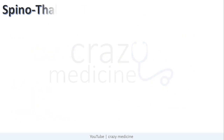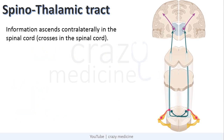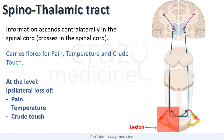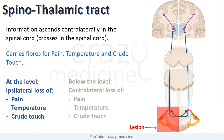Next is the spinothalamic tract. Information ascends contralateral in the spinal cord, i.e. it crosses in the spinal cord itself. It carries fibres for pain, temperature, and crude touch. So its lesion will cause ipsilateral loss of these sensations at the level of lesion because fibres are not yet crossed at that level. And below the level of lesion there will be contralateral loss of these sensations because there is involvement of already crossed fibres which are ascending upwards.